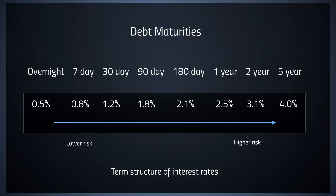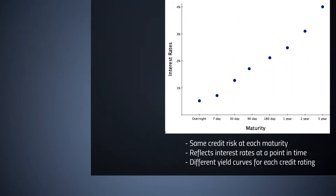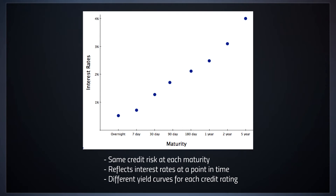If we graph that, we can see something like this, which shows an increase in interest rates and risk as the different maturities — the terms of the borrowings — increase. Now this is for the same credit risk at each maturity, so this isn't reflecting someone that has a bad risk out at the longer time. It's the exact same credit rating, or you can think of it as the same issuer.